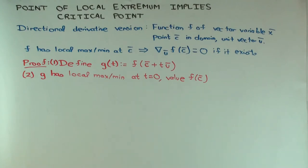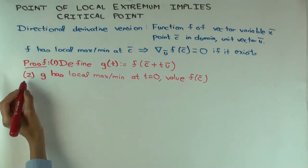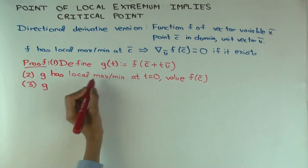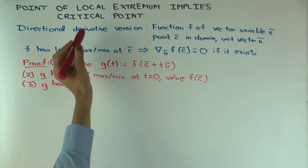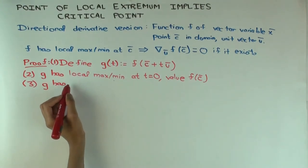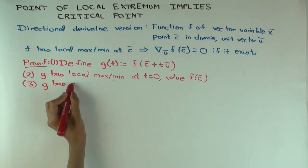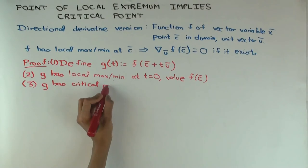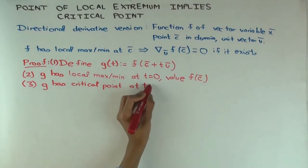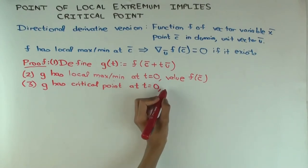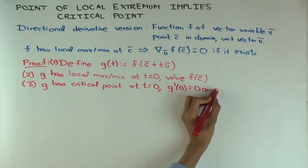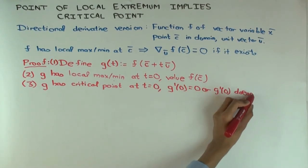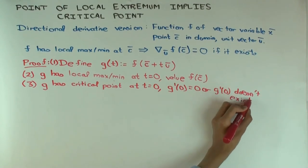Step 3: g is a function of one variable, so we are now in single variable calculus. g has a local max or min at t = 0, which implies it has a critical point there. Using the single variable result, either g'(0) = 0 or g'(0) doesn't exist.